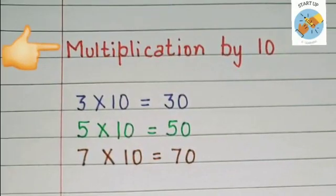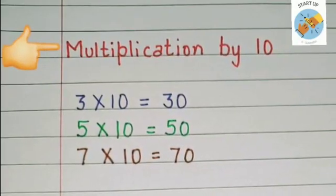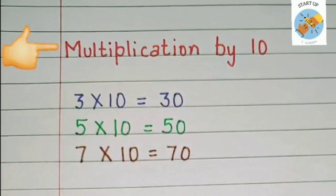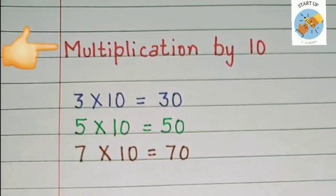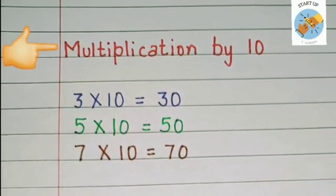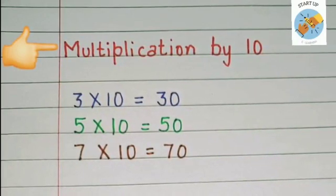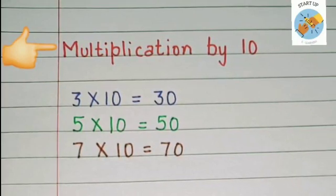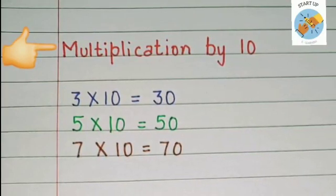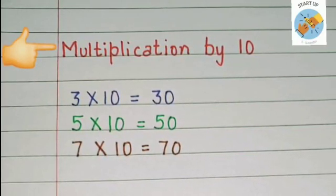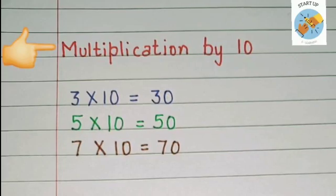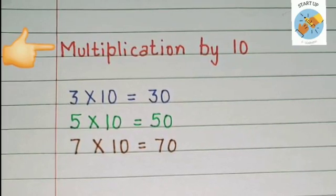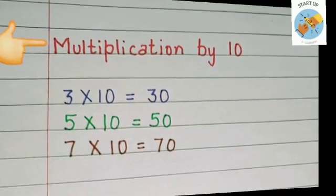Let's see some more examples. Three tens are thirty — in the ones place we put a zero and three multiplied by one is equal to three, so the answer is thirty. Five multiplied by ten is equal to fifty. Seven multiplied by ten is equal to seventy.